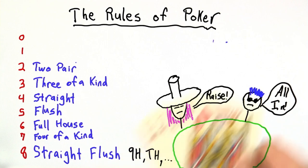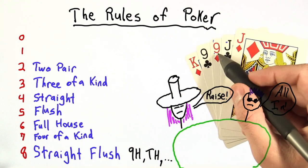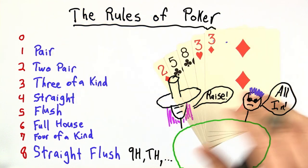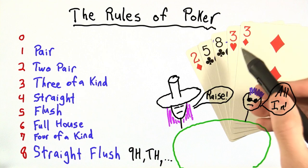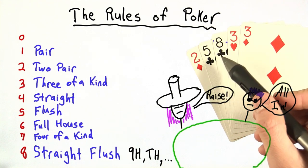Next we have two pair. For example, a pair of jacks and a pair of nines would be two pair. The second worst hand is a pair. And a pair is just two cards of the same rank. Here we have two threes. The eight, five, two don't do much to help our hand here.